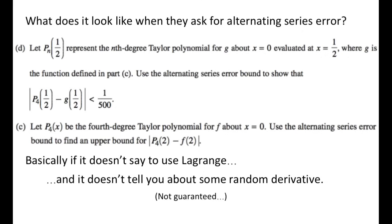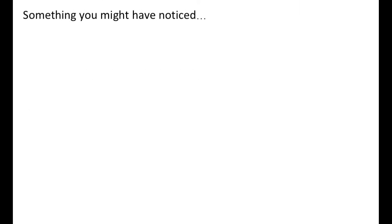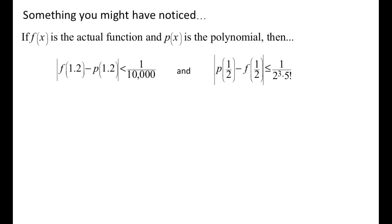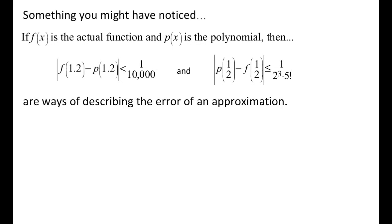Let's talk about that absolute value that keeps showing up. If f of x is our actual function and p of x is the polynomial, then expressions like 'the absolute value of f(1.2) minus p(1.2) is less than 1 over 10,000' — or 'p(1.5) minus f(1.5) is less than or equal to that thing' — are both ways of describing the error of an approximation. It's also a really good way for us to write our justifications when asked to find the error.